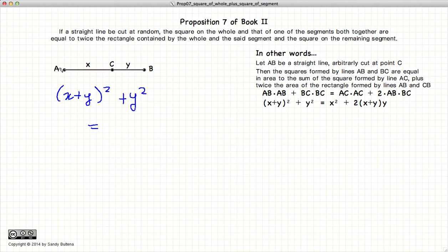is equal to AC squared, which is X squared, plus the entire line segment AB times the segment CB or Y. So this is what we're aiming for.